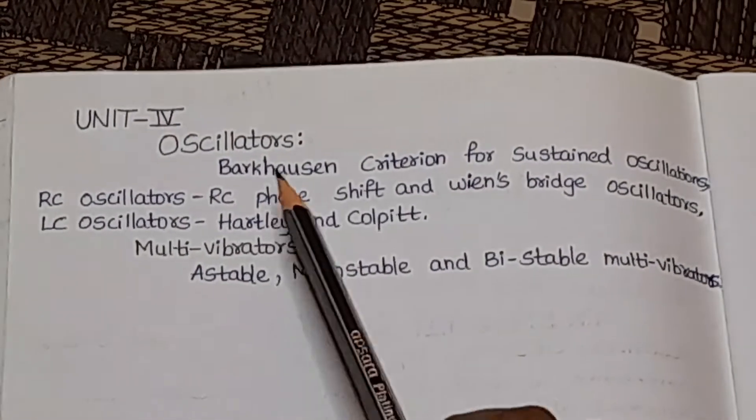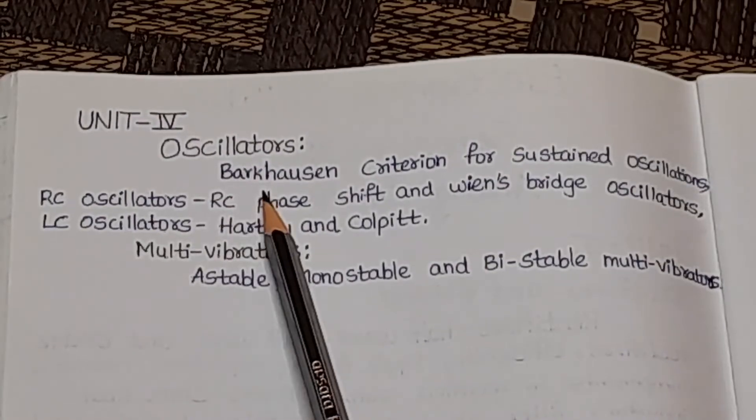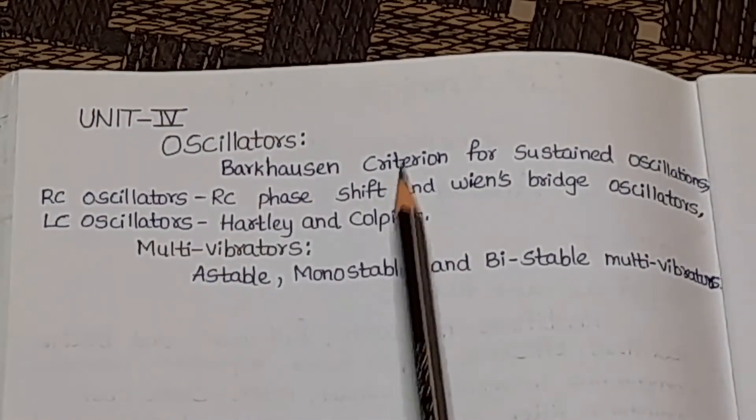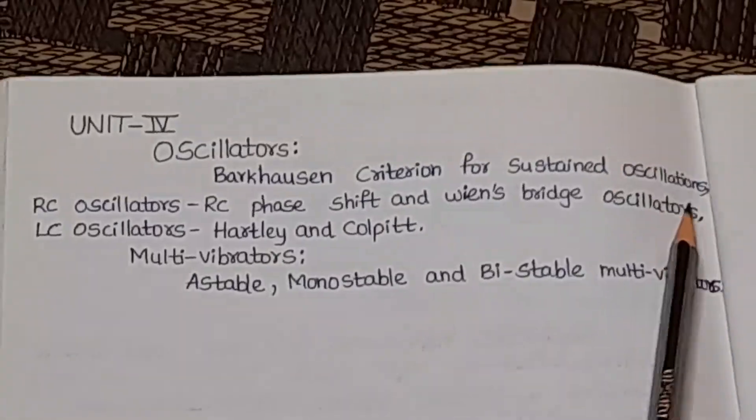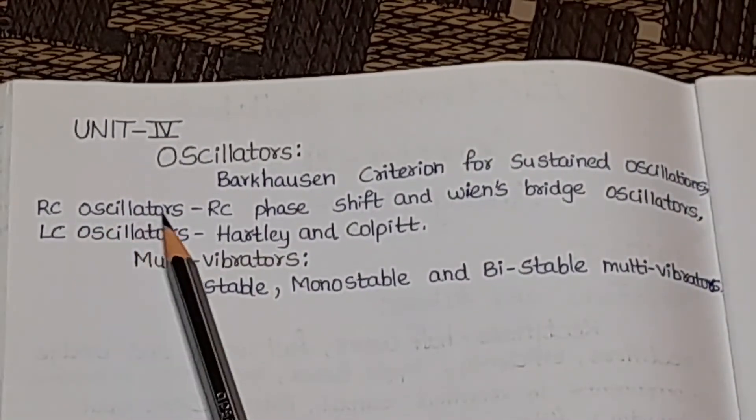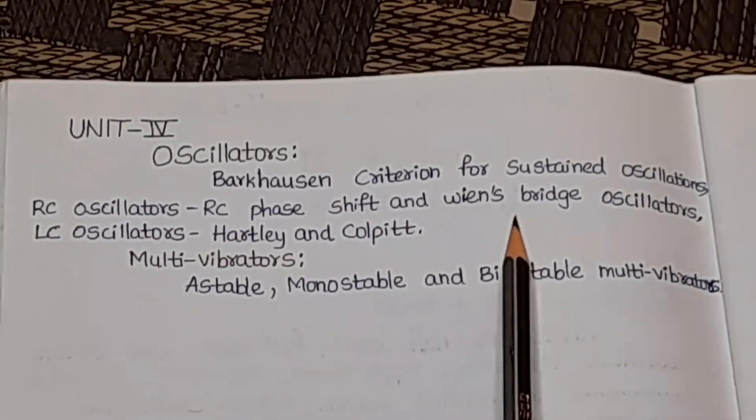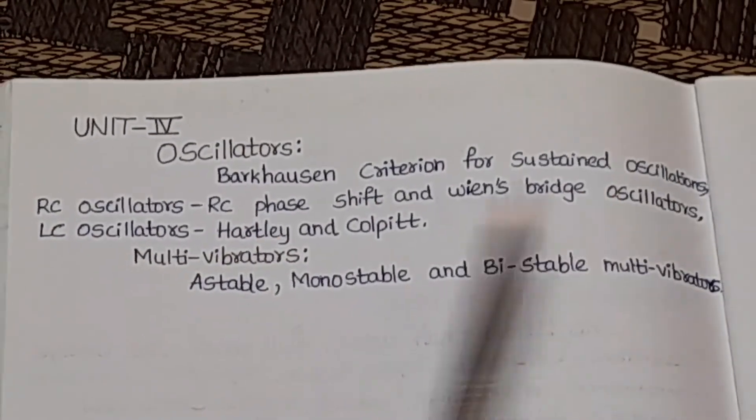In Unit 4, we have oscillators and multivibrators. In oscillators, we will discuss the Barkhausen criterion for sustained oscillations and RC oscillators. In RC oscillators, we will discuss RC phase-shift and Wien's bridge oscillators.